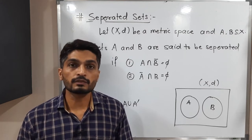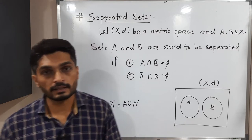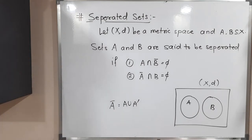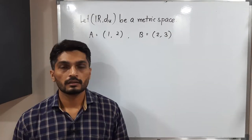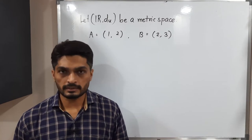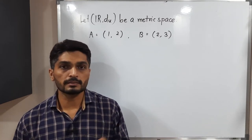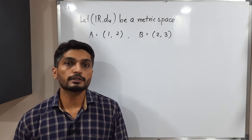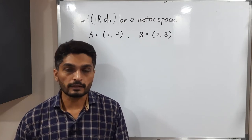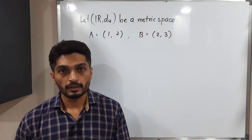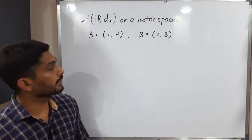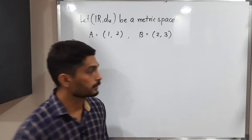Let us discuss a few examples so you can easily understand the meaning of this concept. I have considered a very simple metric space R with the usual metric — that means D of X, Y is equal to mod X minus Y. I have taken two sets A and B.